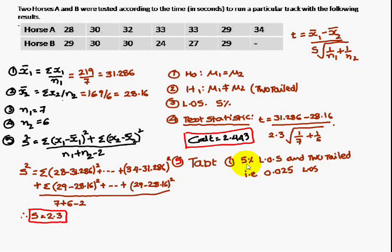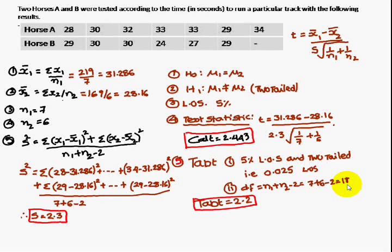5% level of significance and 2 tail test means that is nothing but 0.025 level of significance. And the degree of freedom is n1 plus n2 minus 2, that is 7 plus 6 minus 2, 11. For 11 degree of freedom and 0.025, tablet T is 2.2.